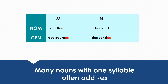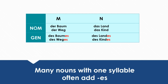In many cases, you add ES at the end of the noun if the noun only has one syllable. For example: 'der Baum' → 'des Baumes,' 'das Land' → 'des Landes,' 'der Weg' → 'des Weges,' and 'das Kind' → 'des Kindes.'